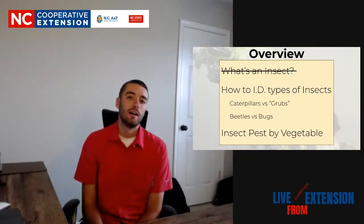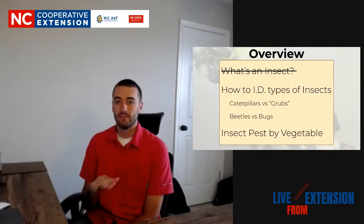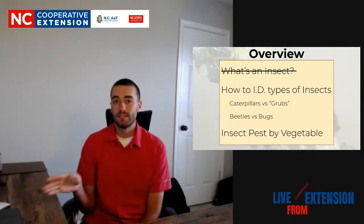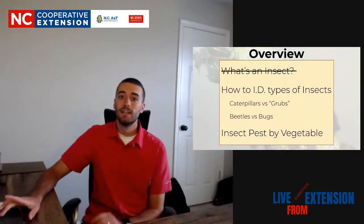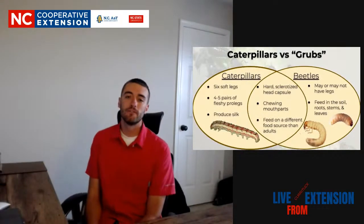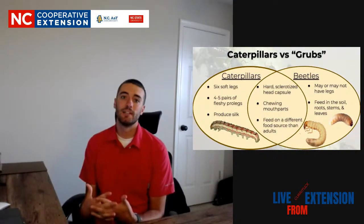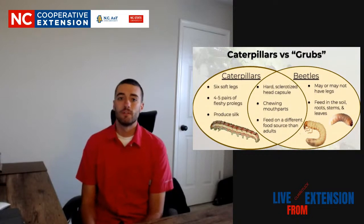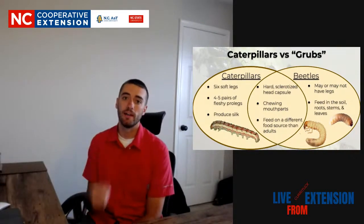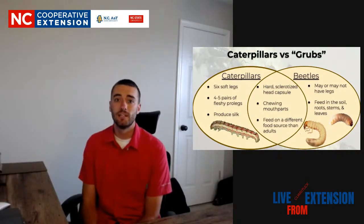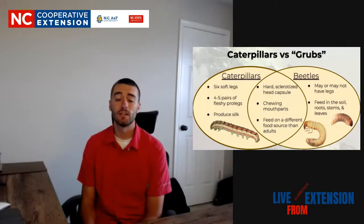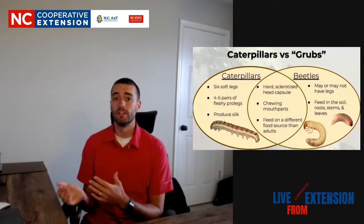If you have any questions on 'what is an insect,' go ahead and type them in the chat. Now we're going to talk about identifying insects that look really similar to other types, and why that is important in your garden. The first group is caterpillars versus grubs. A grub is just an immature beetle, so all grubs will become some sort of beetle. What they have in common is they're really soft and squishy with a hard head, and they all have chewing mouthparts — chewing leaves, stems, or roots.